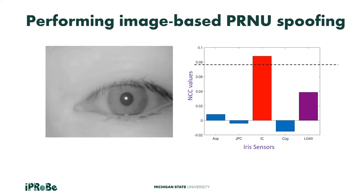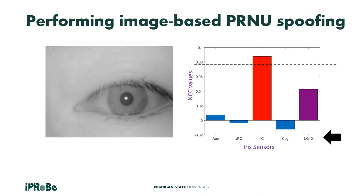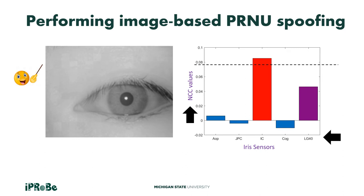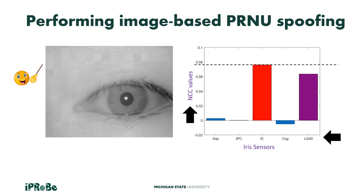This is how our method works. On the left is the PRNU perturbed image. On the right is the variation of the correlation values — along the x-axis are the iris sensors, and along the y-axis are the NCC, the normalized cross-correlation values. As you can see, as the image is iteratively modified, the NCC value of the source sensor IC-DCT decreases, whereas that of the target sensor LG-40 increases, thereby resulting in successful PRNU spoofing.